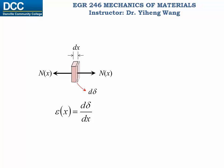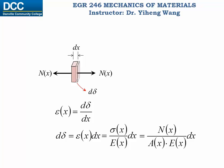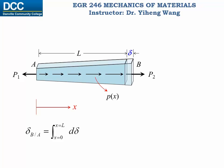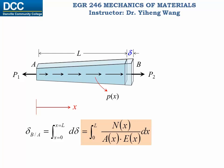Strain is also a variable that is a function of location x. Therefore, d-delta equals epsilon times dx. For elastic material, Hooke's law applies, so epsilon equals sigma over Young's modulus, and sigma equals normal force N over cross-sectional area A. Therefore, the total deformation delta of point B relative to point A equals the integration of d-delta from point A to point B. Point A is at x equals zero and point B is at x equals total length L. Therefore, delta B relative to A equals the integration of internal normal force N over cross-sectional area A and Young's modulus E, integrated from x equals 0 to x equals L. Normal force, area, and Young's modulus could all be functions of location. This is the displacement equation in the most general form.